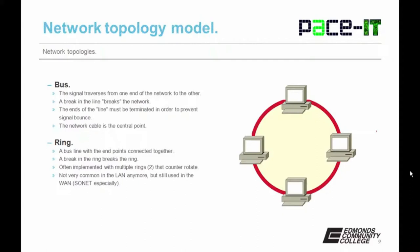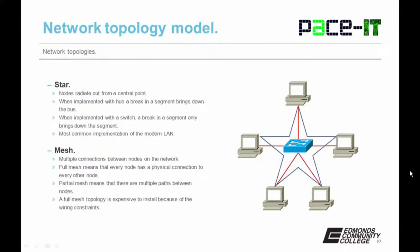Moving on from the ring, we have the star. The nodes radiate out from a central point. When a star topology is implemented with a hub, a break in a segment brings down the whole bus because the hub retransmits out all ports. When implemented with a switch, a break in a segment only brings down that segment. It is the most common implementation in the modern LAN.